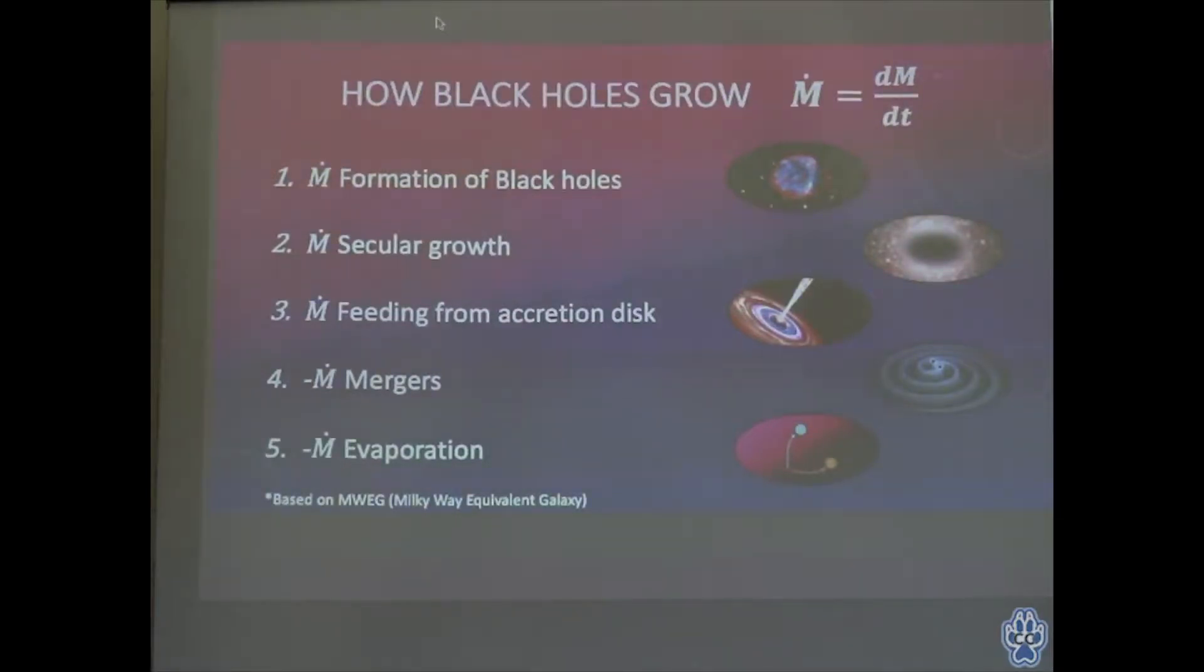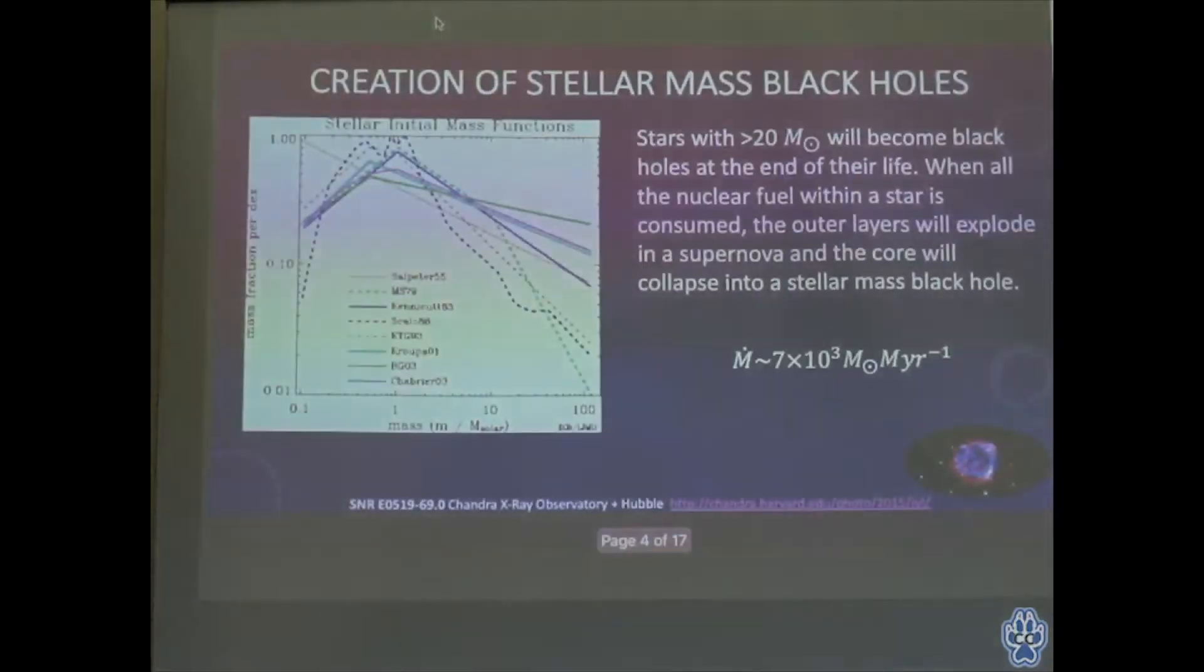First, we'll look at the formation of black holes. Second is secular growth, which is simply matter falling into a black hole. Third is feeding from an accretion disk. Mechanisms four and five are different because they're actually a loss of mass: when black holes merge together or evaporate through a slow process known as Hawking radiation.